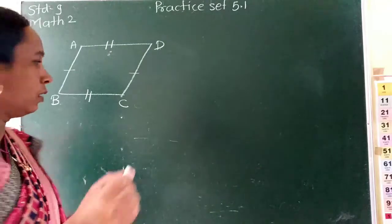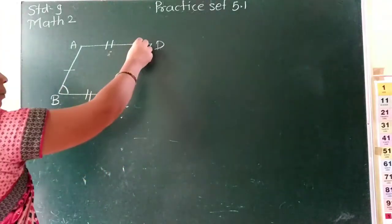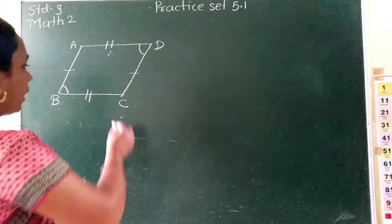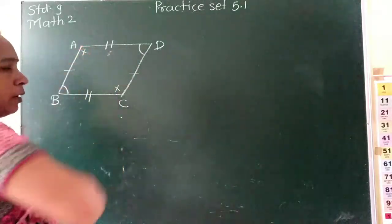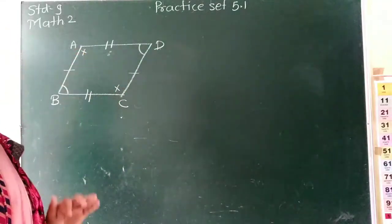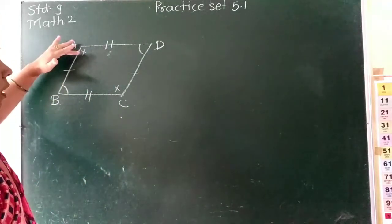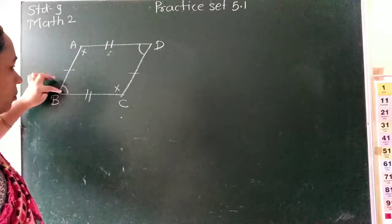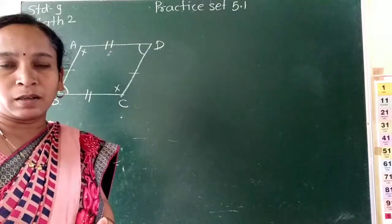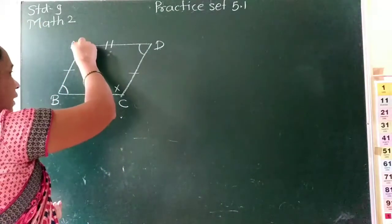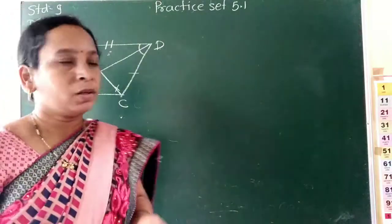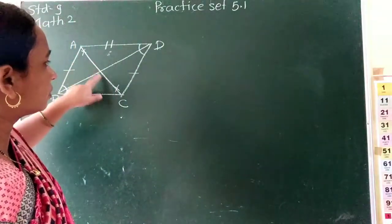In the same way, related with the angles: opposite angles are congruent. Means angle B is congruent with angle D, and angle C is congruent with angle A. If you talk about the adjacent angles, then angles A and B are supplementary — their sum is 180 degrees. Now talking about the diagonals: diagonal AC and diagonal BD are bisectors of each other, so they intersect and make equal parts.